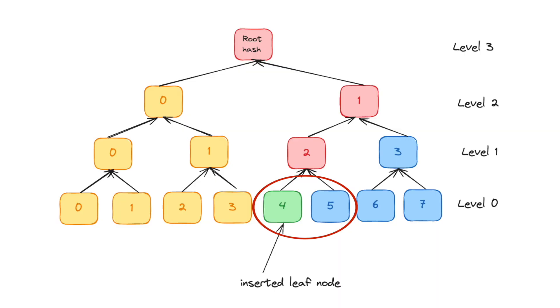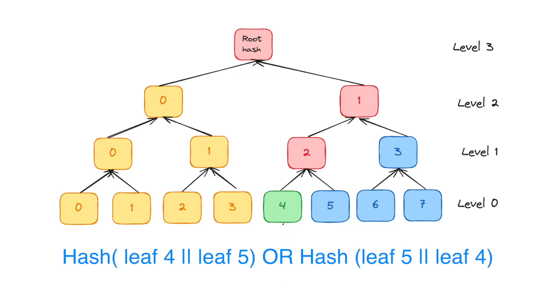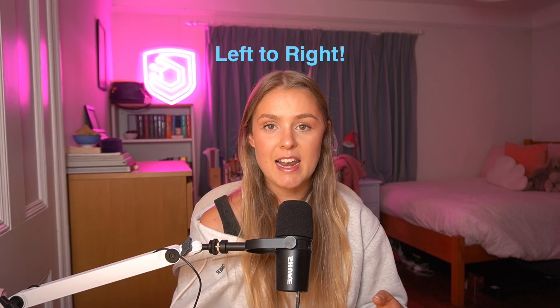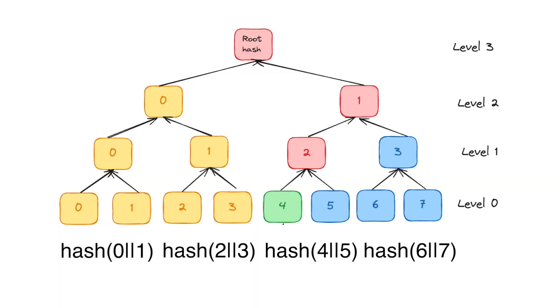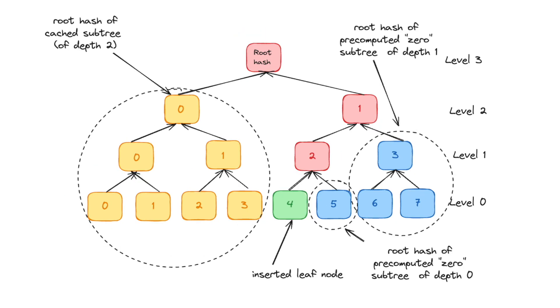There is one final piece to the puzzle: hashing order. When we add a node to the tree, we must hash it with its adjacent node. When we add leaf 4, we must hash it with the zero value in leaf 5. But how do we know the order? The answer is that hashing is done left to right. Even-index nodes are positioned on the left and hashed with the node on the right; odd-index nodes are positioned on the right and hashed with the node on the left. Everything to the right of the node being added will be a zero value; everything to the left must be a pre-calculated cached value.